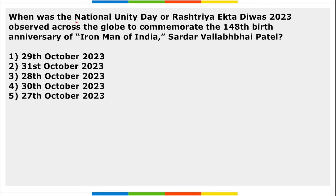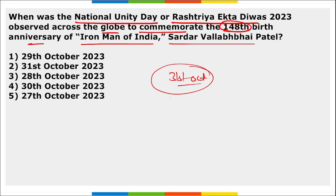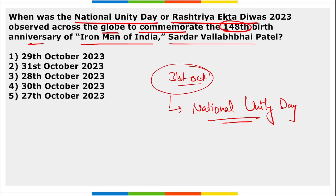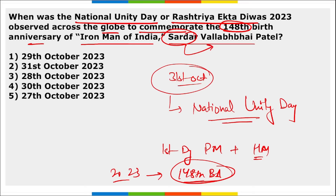When was National Unity Day or Rashtriya Ekta Divas observed to commemorate the 148th birth anniversary of the Iron Man of India, Sardar Vallabhbhai Patel? It is observed on 31st October. Sardar Vallabhbhai Patel was the first Deputy Prime Minister and Home Minister of Independent India. In 2023, it marked his 148th birth anniversary.